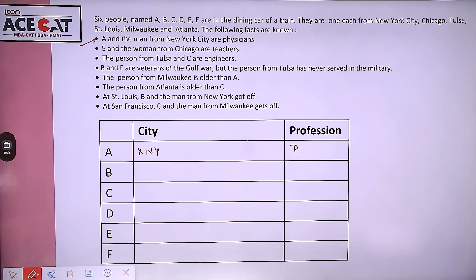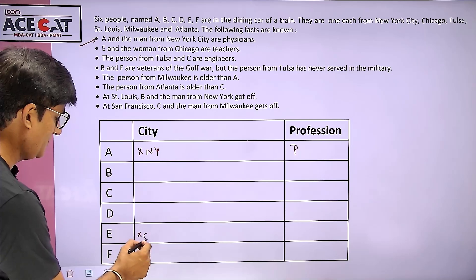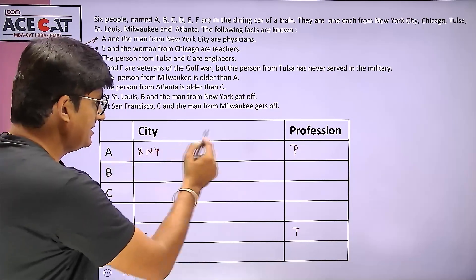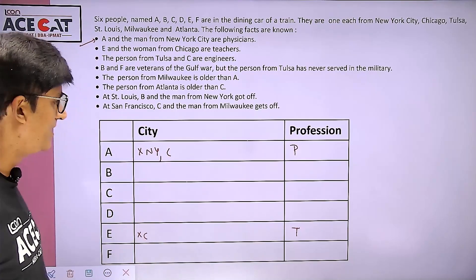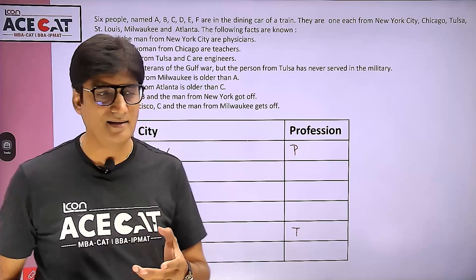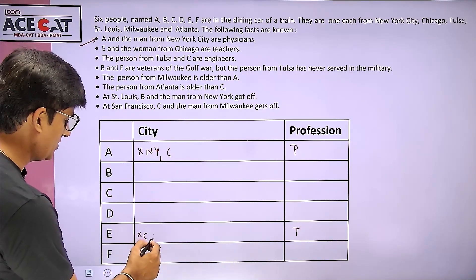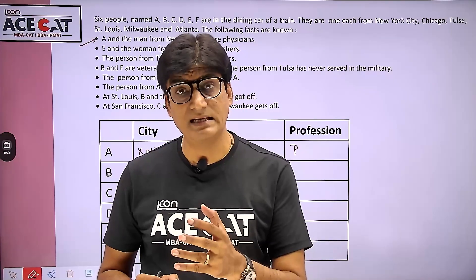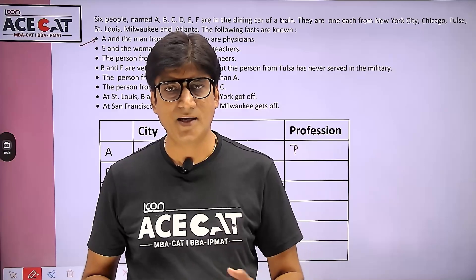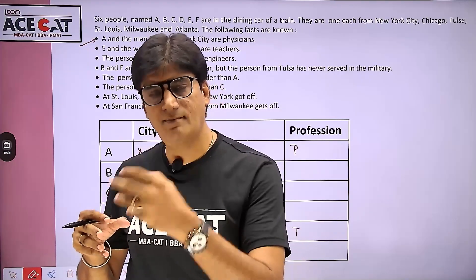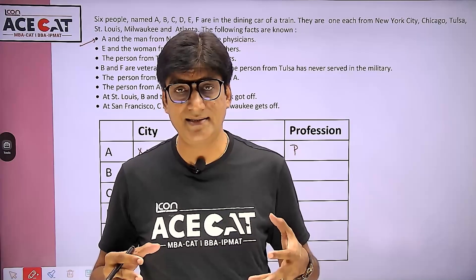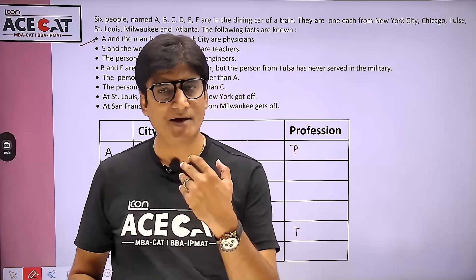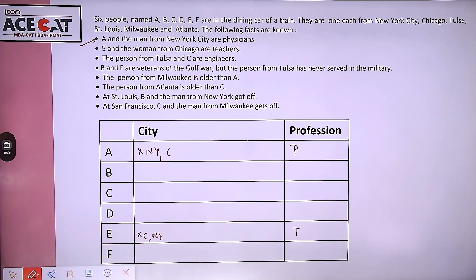Wait — actually the second line says: A and the woman from Chicago are teachers. That itself means A does not belong to Chicago, but A is a teacher. Now, the person from Chicago is also a teacher. But we said A is a physician — so actually A is a teacher, not a physician. And since the New York person is a physician, but E is a teacher, E does not belong to New York. Students, whenever any data comes in front of you, extract as much maximum possible interpretation from every line as possible.